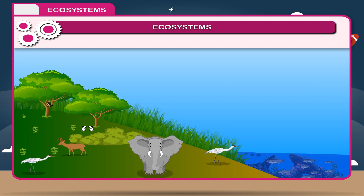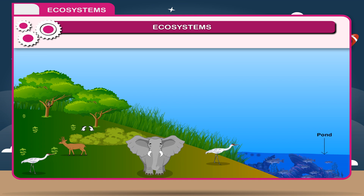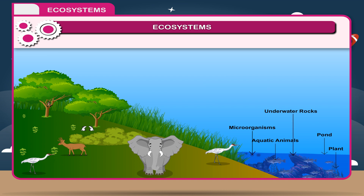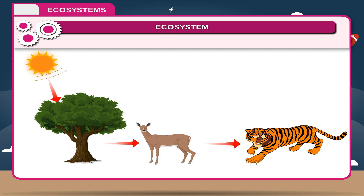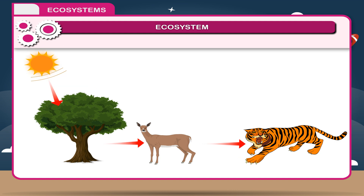If you observe minutely in your surroundings, you will find that all things in our environment depend on each other for their existence. For example, a pond contains varieties of plants and aquatic animals, microorganisms, underwater rocks, etc. These all cannot live separately, therefore depend on each other. Ecosystem can be defined as interdependence of plants and animals to their environment, constituting a biological community and physical environment associated with it.